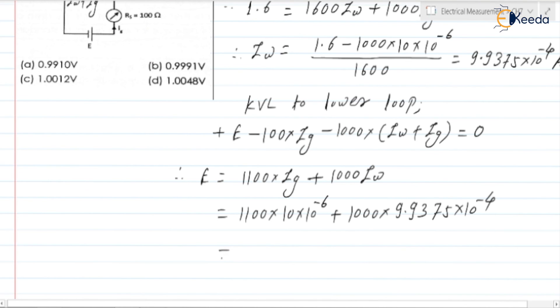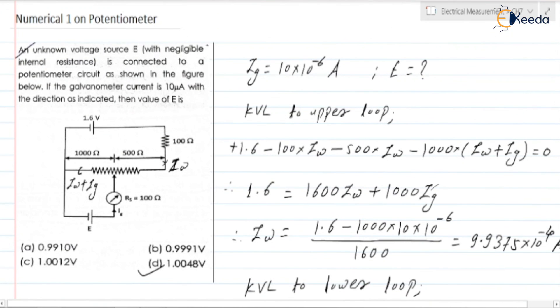So if you simplify it we will be getting it is 1.00. This is the E we are getting. So if you check the options, yes, the correct option is option D. So this is about numerical number one, thank you.